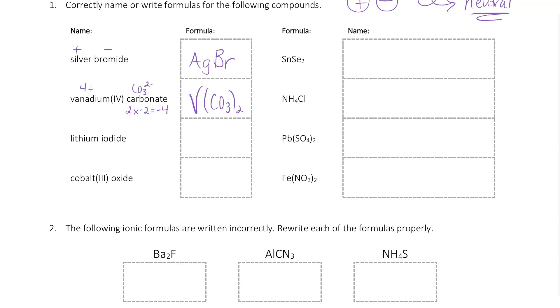Lithium iodide, Li plus, I minus, I can figure that out based on their location on the periodic table. Lithium is in group 1, it's going to be plus 1 charge. Iodide is in group 17, it's going to be a minus 1 charge.